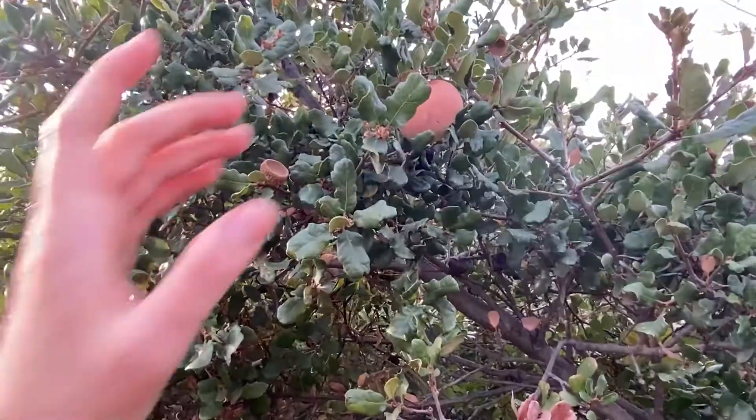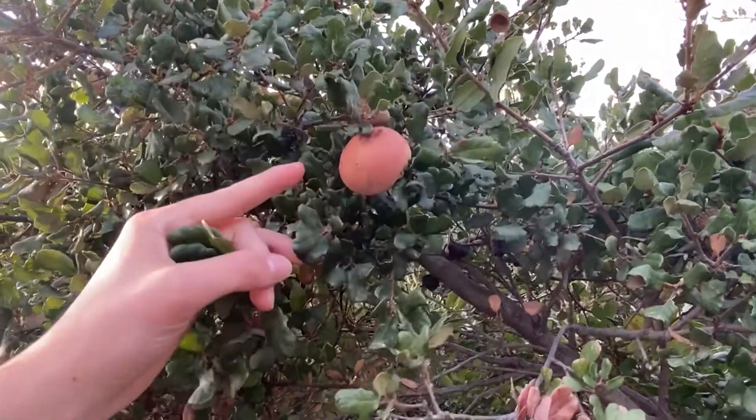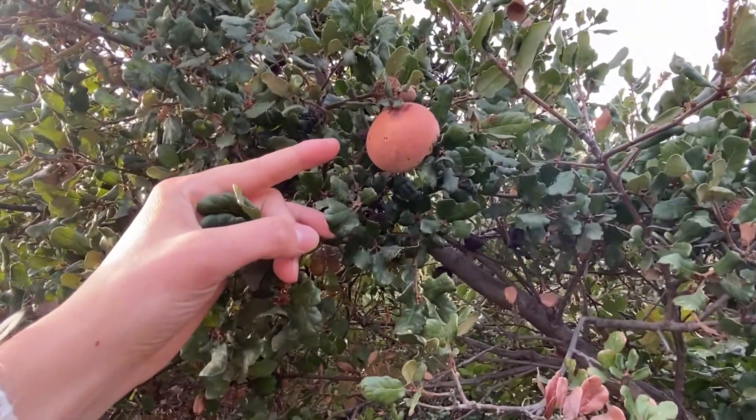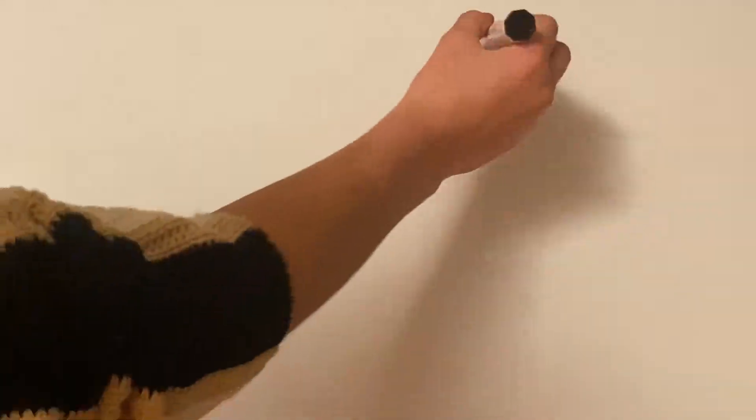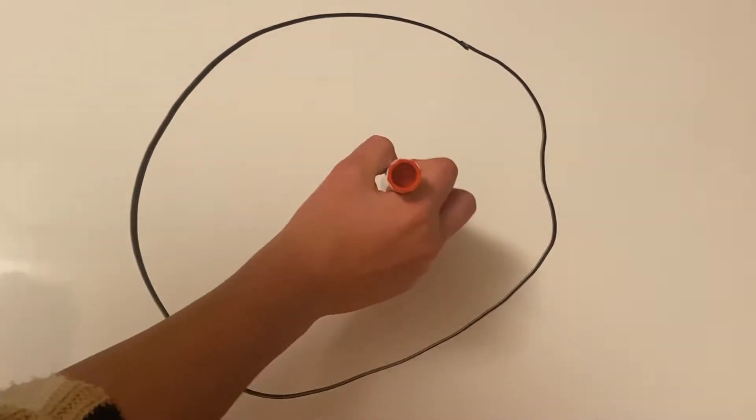You can find galls just about everywhere — on the leaves, the branches, the roots, or even the flowers of a tree. Every gall has three essential parts, each of which acts as an additional layer of protection for the growing baby insect.